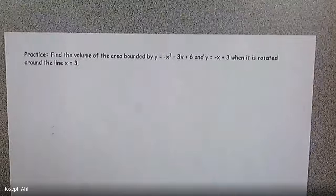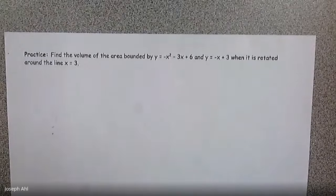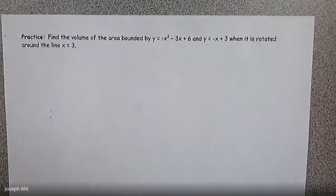We have one more practice question left in this lesson, and it happens to be find the volume of the area bounded by this parabola, negative x squared minus 3x plus 6, and y equals negative x plus 3. When it is rotated around the line x equals 3.